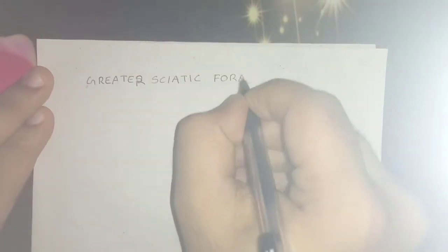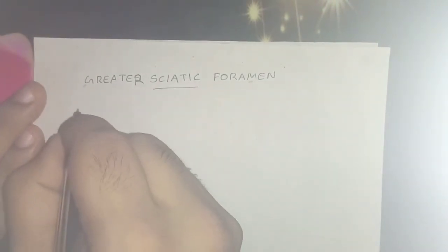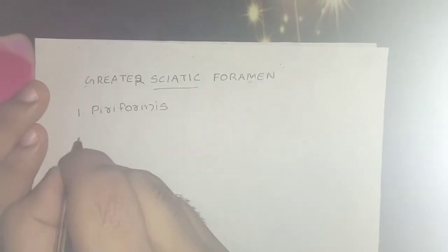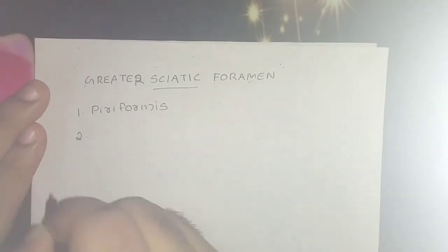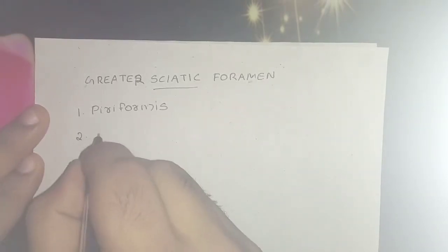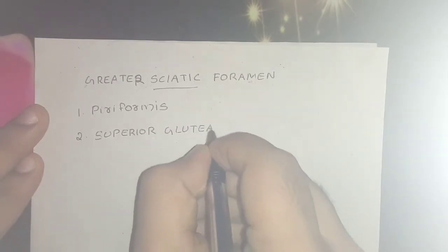Hello guys, welcome back to YouTube channel PD Bros. This is me Debra. On this topic: structures passing through the greater and lesser sciatic foramen. For the greater sciatic foramen, the first structure is the piriformis — it emerges from the pelvis, fills the foramen almost completely, and is the key muscle of the region.